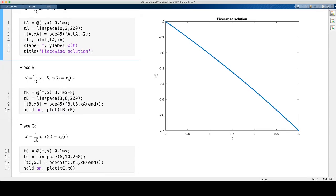In the second piece, now the forcing term is turned on. So I have this plus 5 here. So that reflects, or that has to be reflected in this definition for the differential equation here. I want to solve this piece at times between 3 and 6.